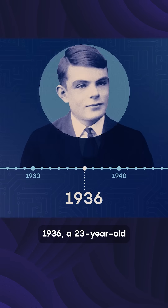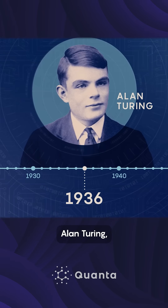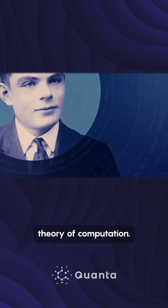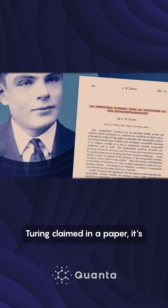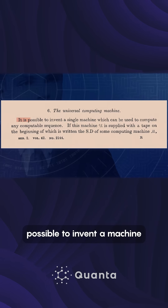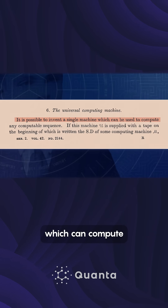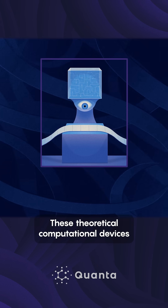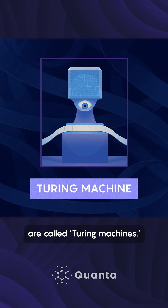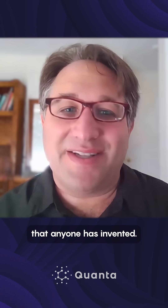In 1936, a 23-year-old British university student, Alan Turing, developed a fundamental theory of computation. While attempting to solve a problem about the foundations of math, Turing claimed in a paper it's possible to invent a machine which can compute any computable sequence given enough time and memory. These theoretical computational devices are called Turing machines. One of the key insights of computer science is that Turing machines are mathematically equivalent to just about any other programming formalism that anyone has invented.